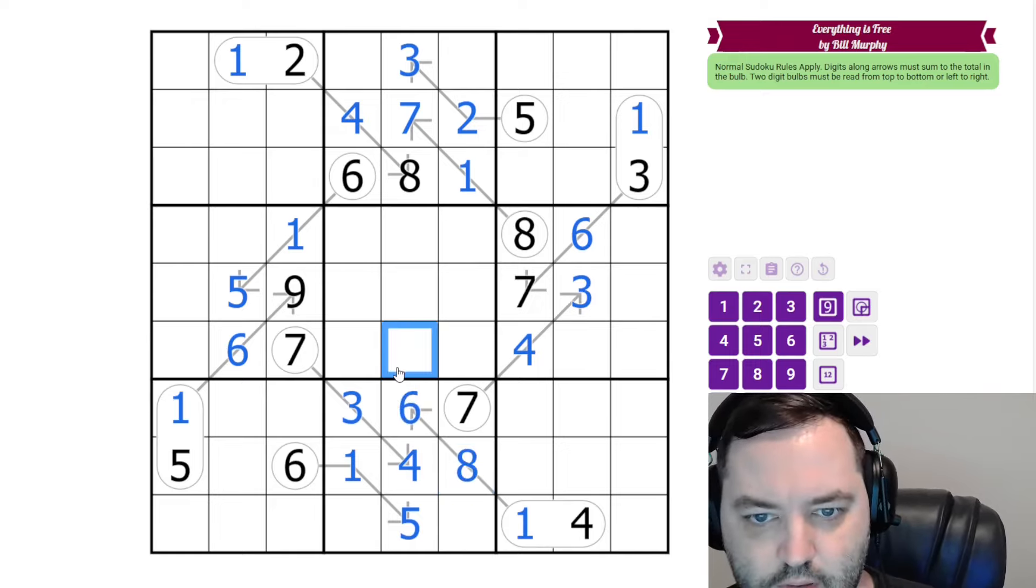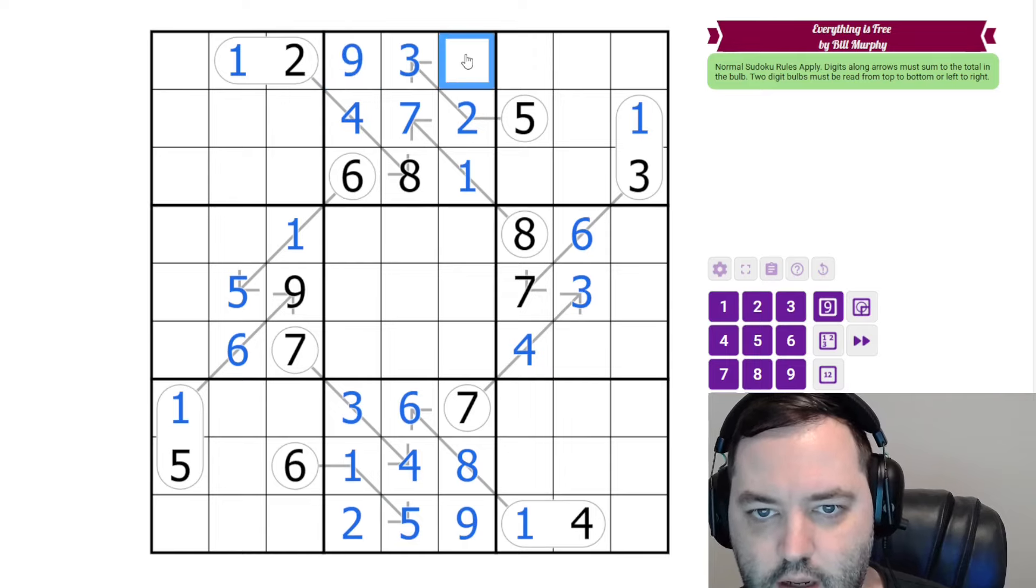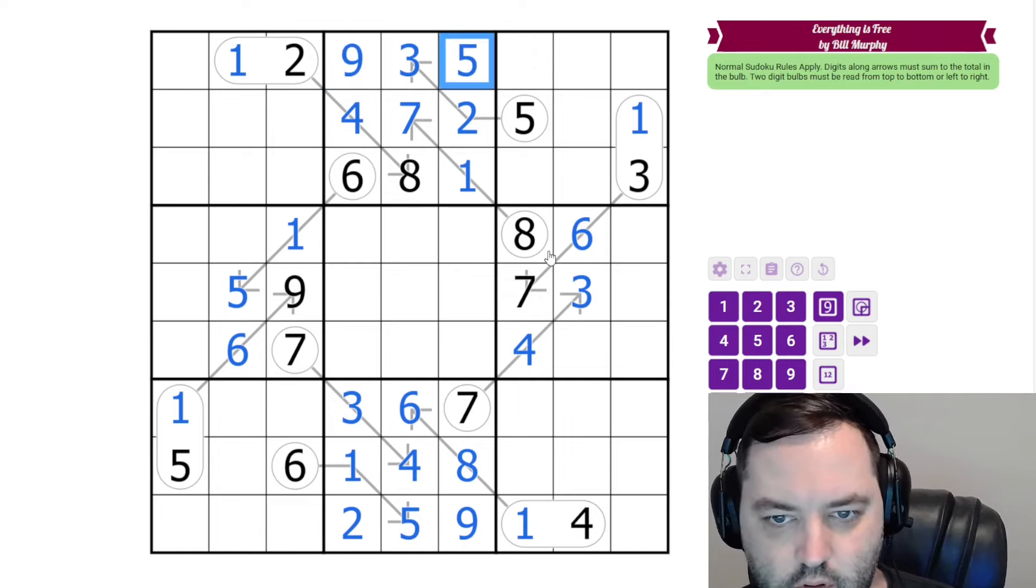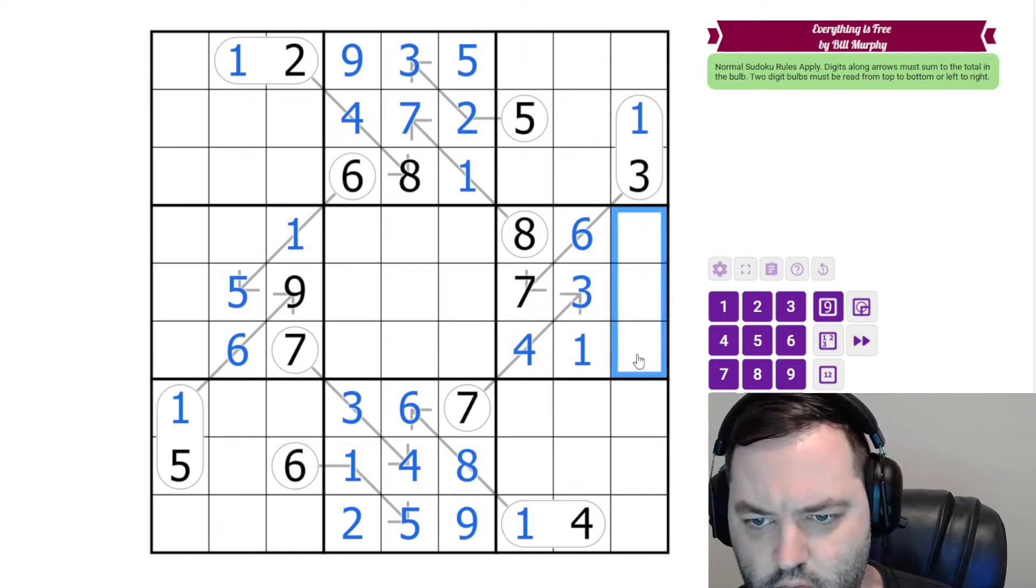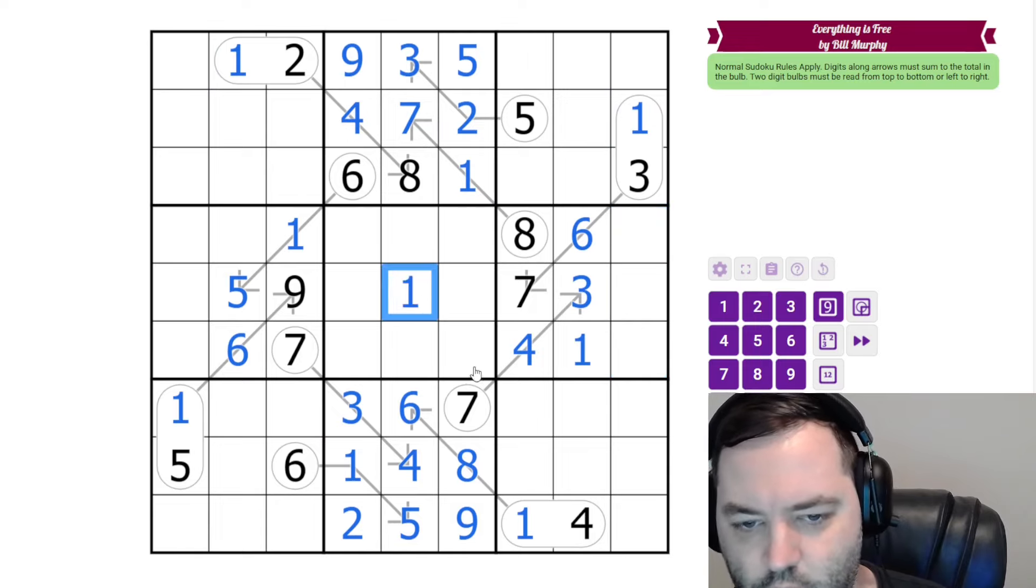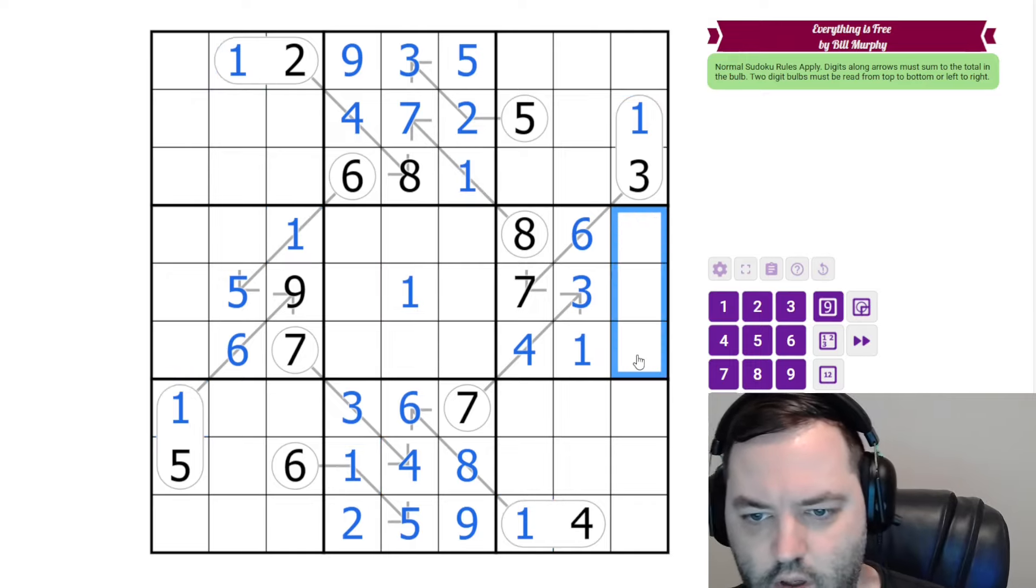And now we're left with classic Sudoku. Down here we need 2 and 9. So that's a 9, that's a 2. Up here we need 9 and 5. 1 we can probably, yeah, we can put a 1 here. 1 can't go in these cells. And the 1 is going to have to go in the center in the central box. And that's all the 1s. These are 2, 5, and 9. There's a 5 and 9 here. 2 there.